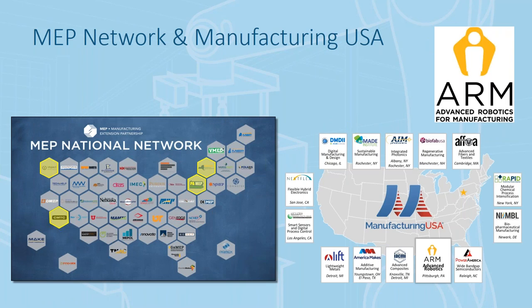The MEP National Network is where both Raminder and I work. We have over 50 centers around the country as part of the Manufacturing Extension Partnership, all focused on supporting small and medium manufacturing. It's a public-private partnership that receives federal funding through NIST, and many states have state funding sources as well.